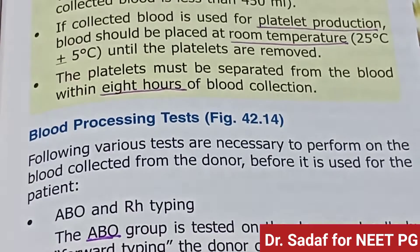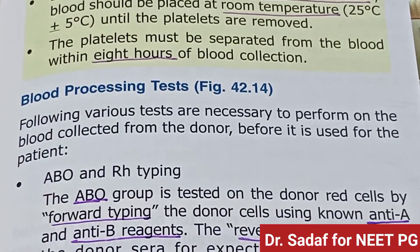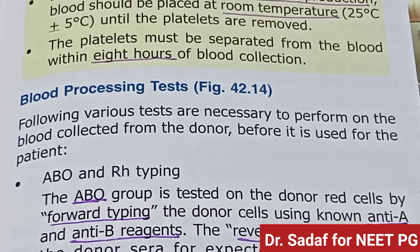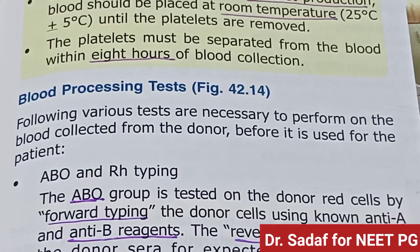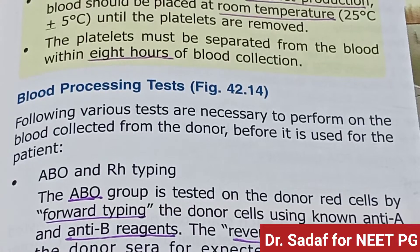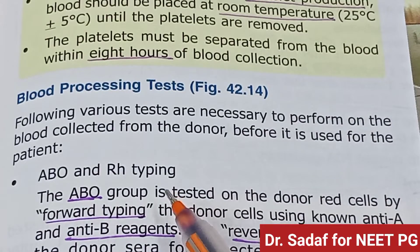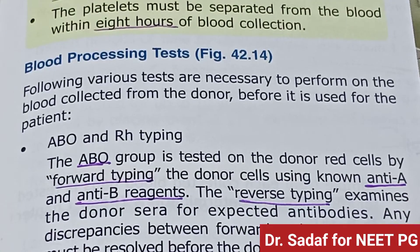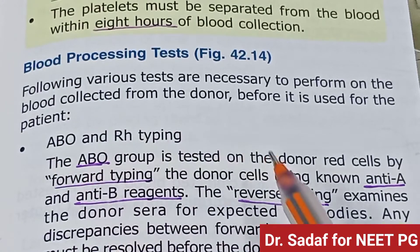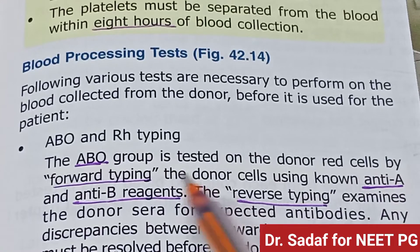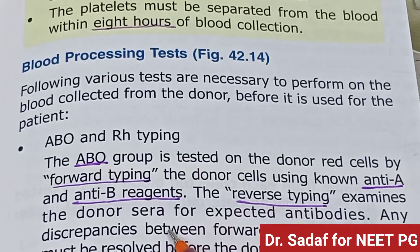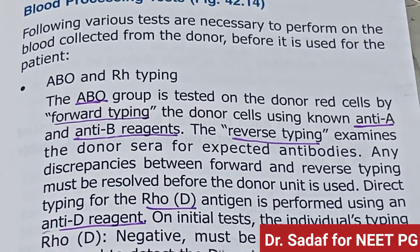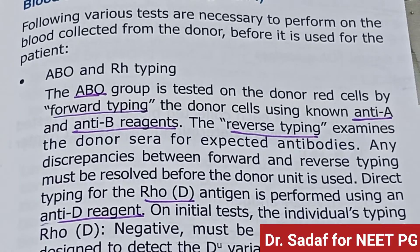Blood processing testing: the following tests are necessary before blood collected from a donor is used for a patient. ABO group is tested on donor red cells by forward typing using known anti-A and anti-B. Reverse typing examines donor serum for expected antibodies. Any disparities between forward and reverse typing must be resolved before the donor unit is used.